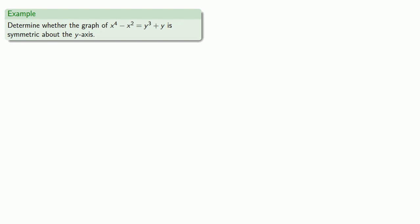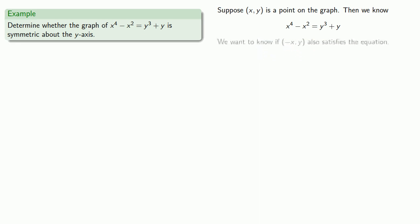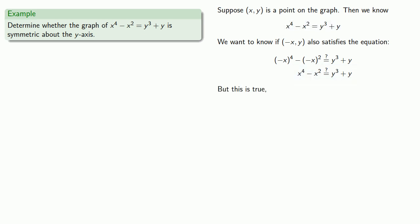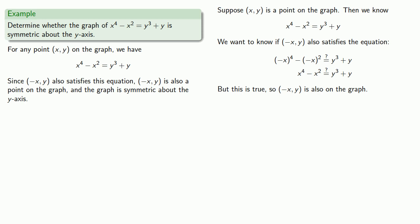Let's determine whether this graph is symmetric about the y-axis. Suppose (x, y) is a point on the graph, then x and y satisfy the equation. We'd like to know if (-x, y) also satisfies the equation. Making our replacement and doing a little algebra, we know the original statement is true, and this is the same thing, so we know that (-x, y) also satisfies the equation. Therefore (-x, y) is also on the graph. For any point on the graph, the equation x⁴ - x² = y³ + y is true. Since (-x, y) also satisfies this equation, it is also a point on the graph, and the graph is symmetric about the y-axis.